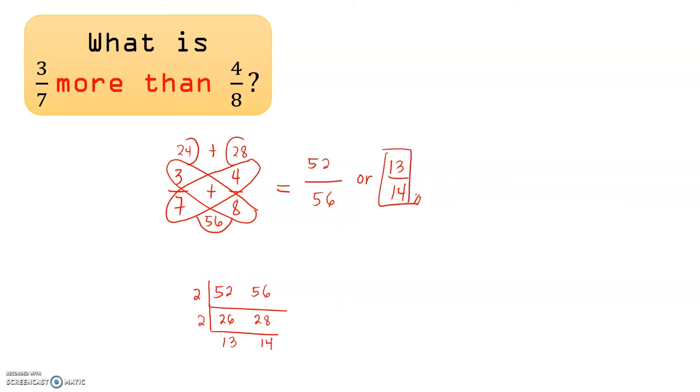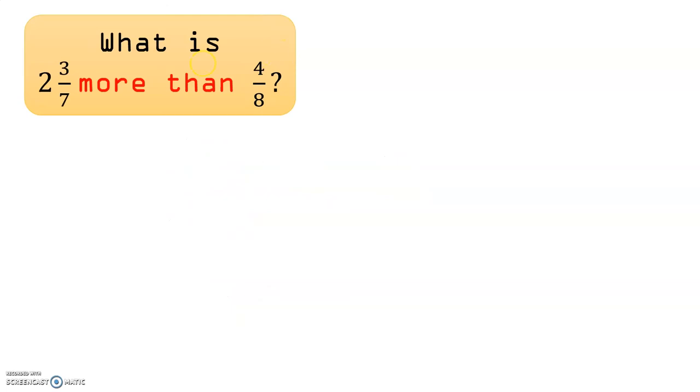Let's try another example. What is 2 and 3/7 more than 4/8? So let's solve here. 2 and 3/7 plus 4/8. Take note that whenever we have a mixed fraction, what we will use in our butterfly method is only the fraction here.